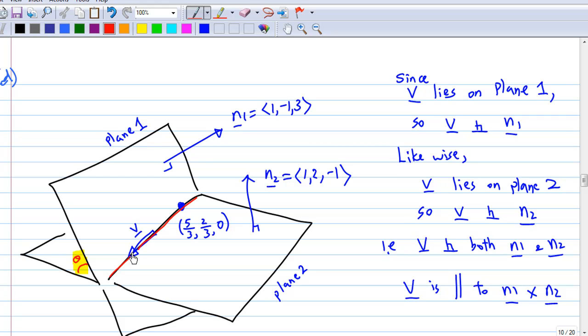Now let's find the direction of the line. Let v be the vector representing the direction of the line. Then first of all, v lies on the first plane. So v must be perpendicular to n1, the normal to the first plane.